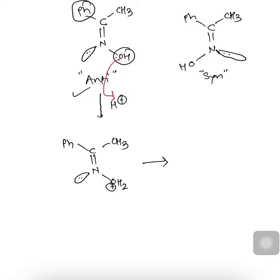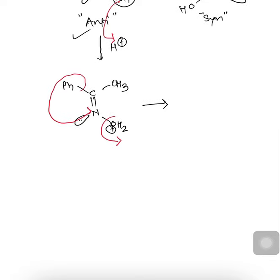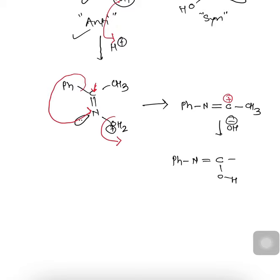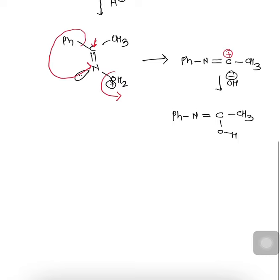The phenyl group migrates from carbon to nitrogen, and the water molecule is eliminated. We can rewrite this structure as: Ph attached to nitrogen, which is double-bonded to carbon, with a CH3 group. Since the phenyl group has migrated, this carbon atom has no bonding electron pair and carries a positive charge. The next step is attack by OH−.